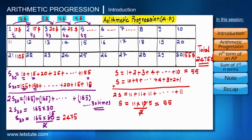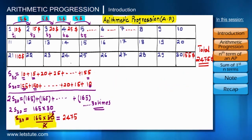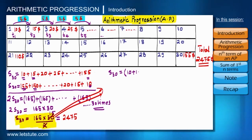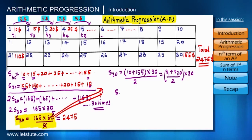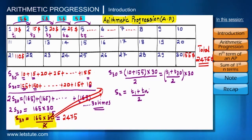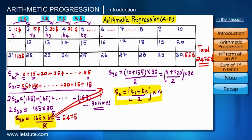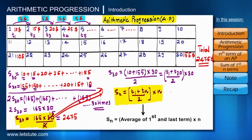Now, can we generalize this? Yes. We can write S30 as (10 plus 155) times 30 divided by 2, where 10 is the first term and 155 is the last term t30. Generalizing: Sn equals (t1 plus tn) divided by 2, times the total number of terms n. Using this expression we can find the summation of any arithmetic series.